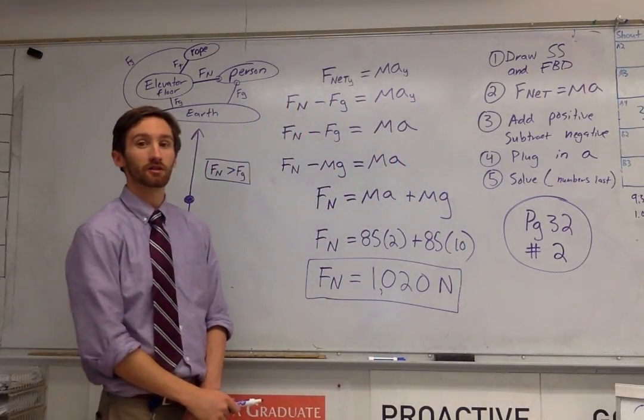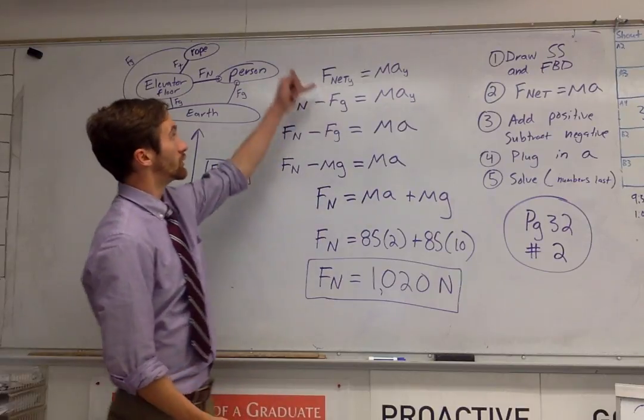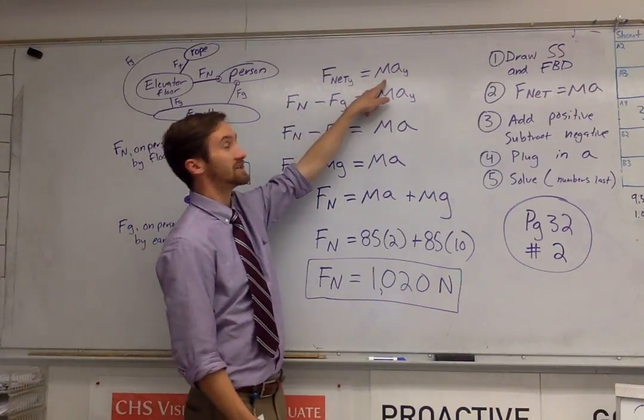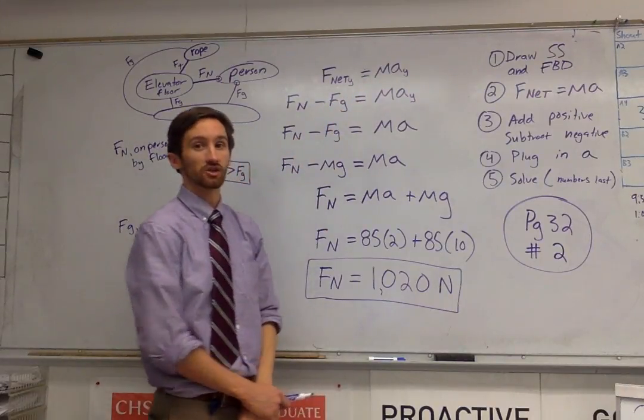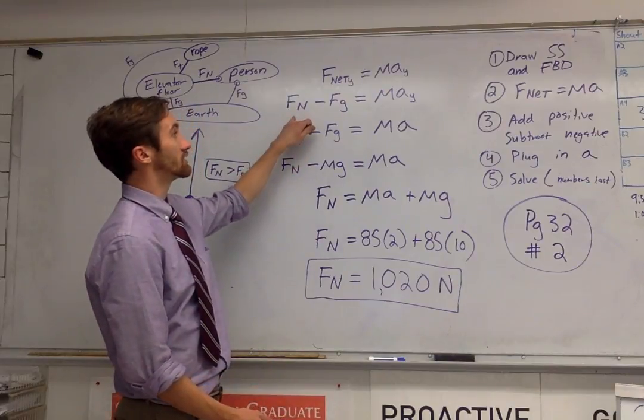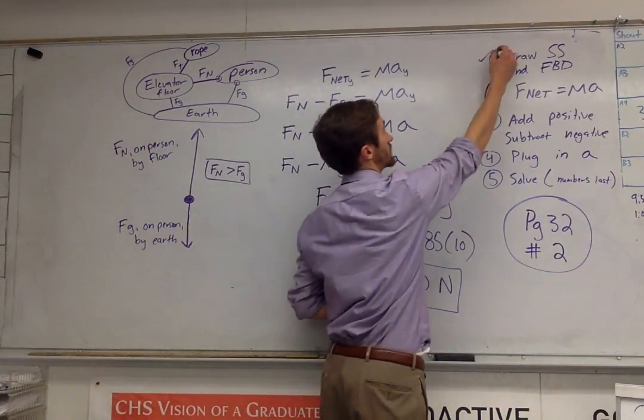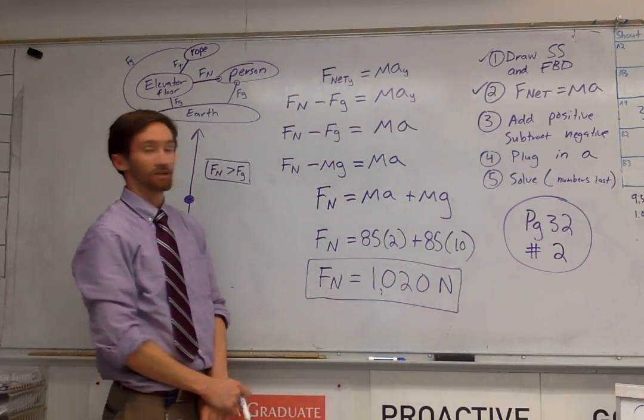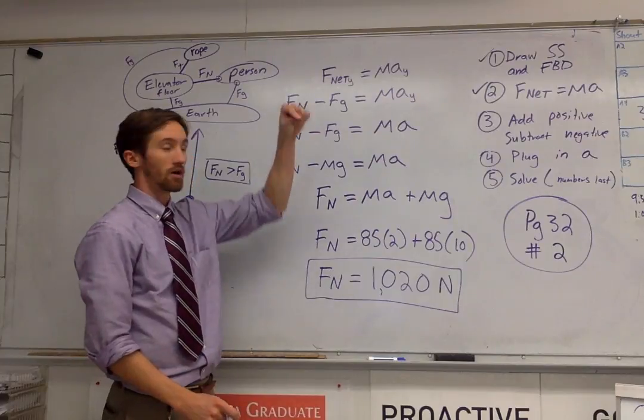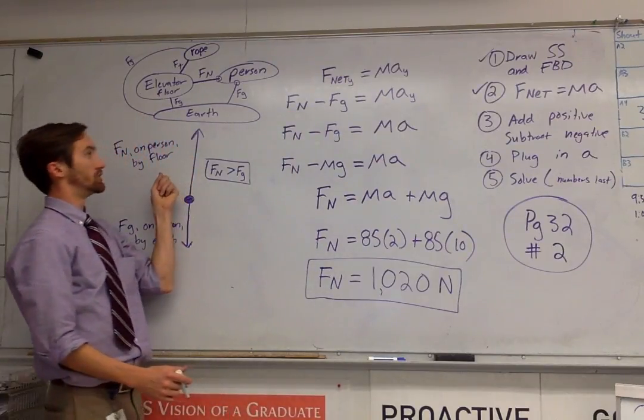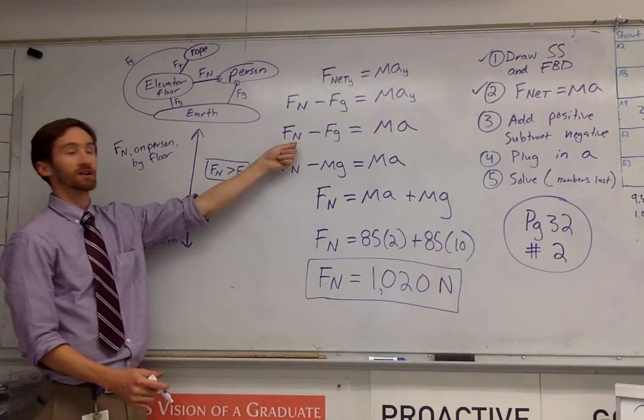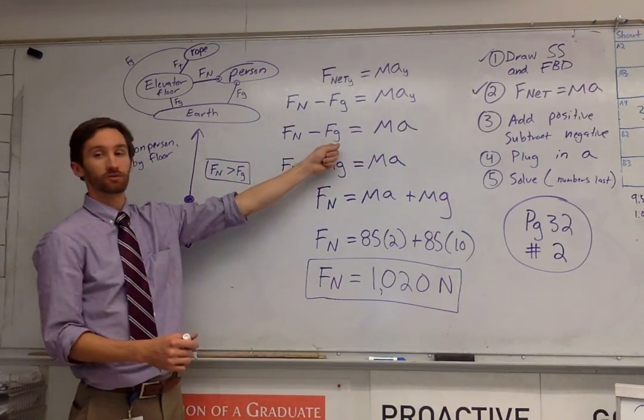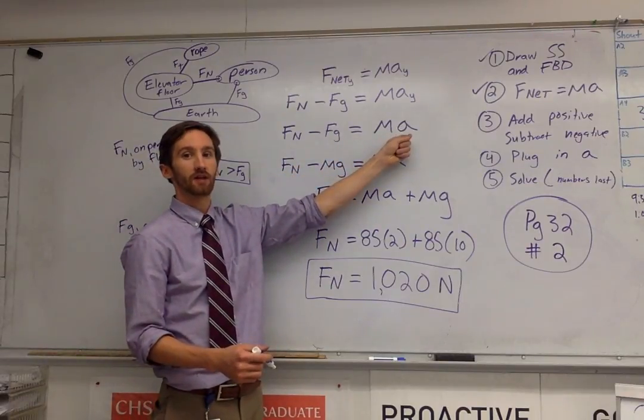The math becomes a little bit different too. We still start with our net force in the y direction equals the mass times the acceleration in the y direction. We still break up our net force into all of the positives get added, all of the negatives get subtracted. So normal force is positive, we add it. Gravity is negative, we subtract it. That equals mass times acceleration.